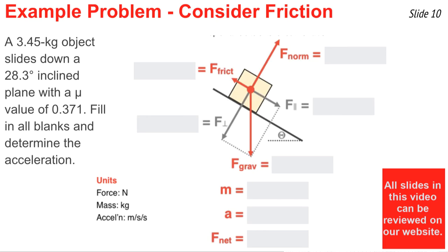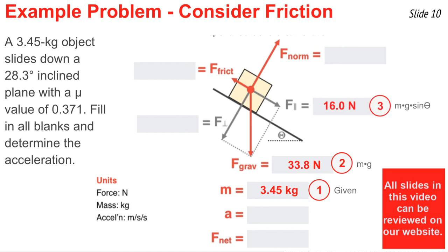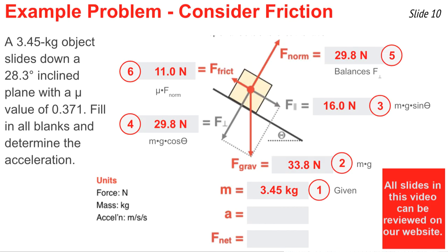Now let's do the same problem but factor in friction. Same mass, same angle theta, but with a coefficient of friction mu of 0.371. I write down the mass and calculate F-grav, then find the components: F-parallel is mg sine theta, giving 16.0 Newtons, and F-perpendicular is mg cosine theta. F-normal balances F-perpendicular, so F-friction equals mu times F-normal: 0.371 times F-normal gives 11.0 Newtons. There are now two forces parallel to the plane — 16.0 Newtons and 11.0 Newtons. Subtracting gives 5.0 Newtons down the incline as F-net, and dividing by 3.45 kilograms yields the acceleration.